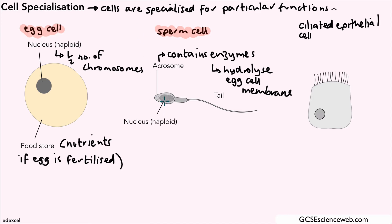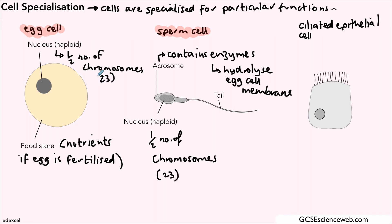The tail is quite an obvious one in terms of its function. We also have a nucleus, and again just like the egg cell, that nucleus is what we call haploid. So it contains half the number of chromosomes of most body cells, and that number is 23 for humans. So egg cells and sperm cells contain 23 chromosomes each.